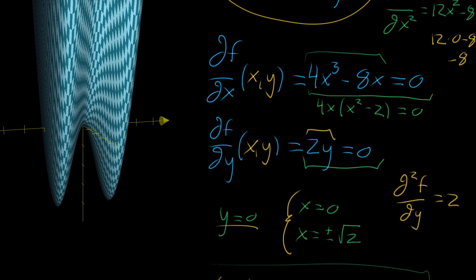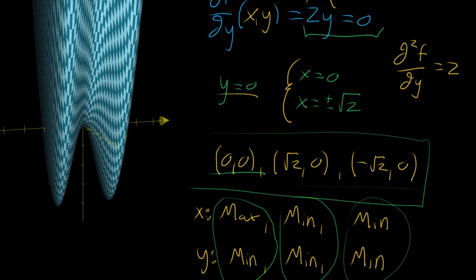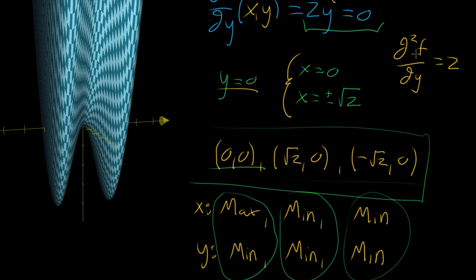We took the second partial derivative with respect to x, and found that when evaluated at x equals zero, you get a negative number, indicating negative concavity — so it looks like a maximum. Then the second partial derivative with respect to y gives you two as a constant, a positive value, indicating it looks like a minimum in y. That's why the origin looks like a saddle point — the x and y directions disagree. When you do this with the other points, they both agree it should look like a minimum.